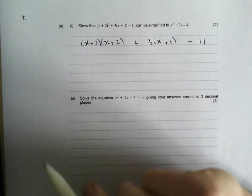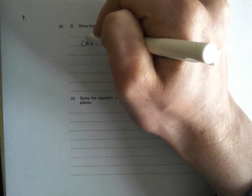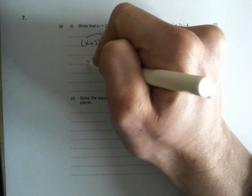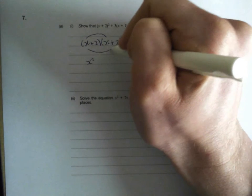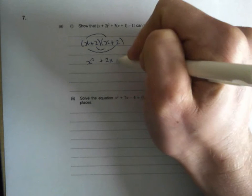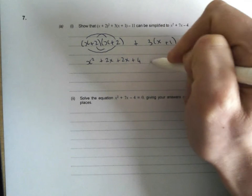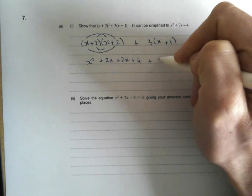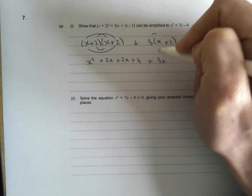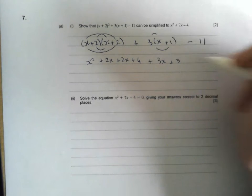x plus 2 times x plus 2. I don't mind what order you do these, but I go for this. x times x is x squared, x times 2 is positive 2x, 2 times x is positive 2x, 2 times 2 is 4. Plus 3 lots of x, 3x. 3 lots of 1, 3 minus 11.